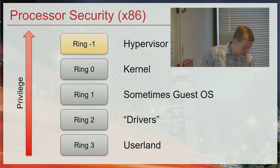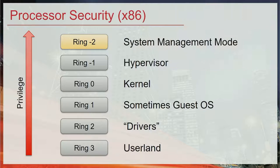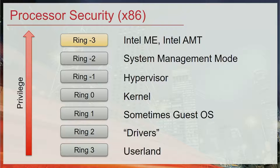But that raises the question: what if ring minus 1 is compromised? What if there's a vulnerability in your hypervisor? So we add ring minus 2, which is system management mode. And if ring minus 2 gets compromised, then you put your secrets in ring minus 3, which is the Intel management engine or Intel AMT. You just keep adding more and more rings to keep protecting your secrets.